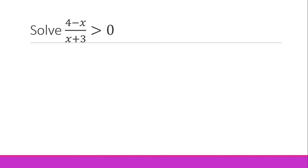So how do we solve this one? Since the right side is zero and the left side is a single term, this is very easy for us. We are simply going to equate the numerator and then the denominator to zero.